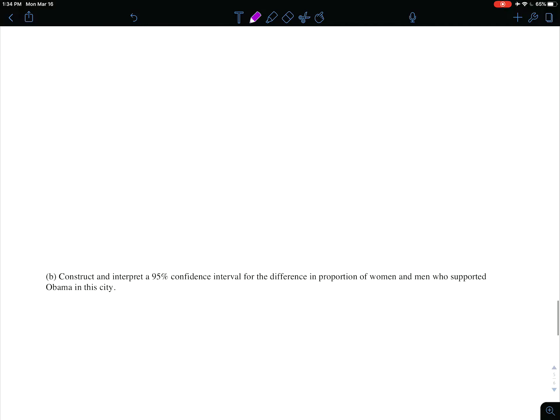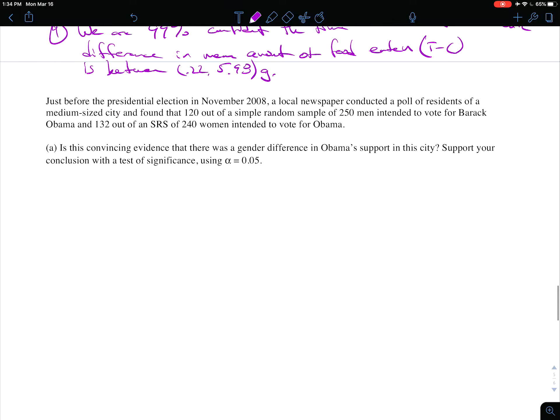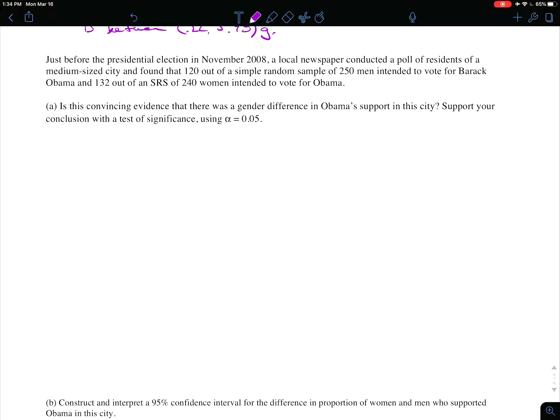Looks like we've got one left here. We've got an election coming up, so we're looking at, in this case, Obama in 2008. And 120 out of 250, 132 out of 240, and we're looking at men and women voting for President Obama. Is this convincing evidence that there's a gender difference in Obama's support? So a significance test at alpha equals 0.05.